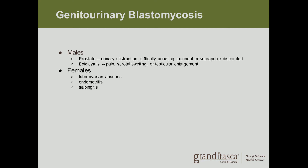Genitourinary blastomycosis is rare but can occur. In males, it appears in the prostate or epididymis. Prostate involvement causes urinary obstruction, difficulty urinating, and perineal or suprapubic discomfort. Epididymal involvement causes scrotal swelling, pain, or testicular enlargement. In females, it has been found in tubo-ovarian abscesses, endometritis, and salpingitis.